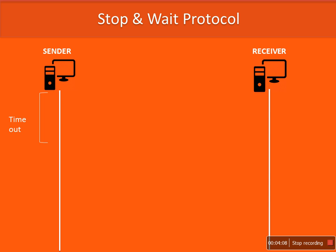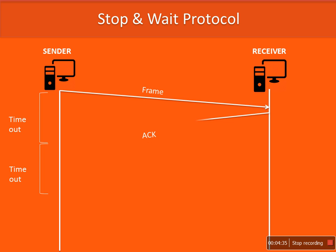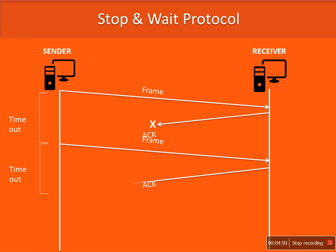Here I will explain why we need sequence numbers and acknowledgement numbers in stop-and-wait protocol. I am discussing four scenarios. First scenario: a frame is sent to the receiver and the receiver sends a reply, and this acknowledgement is sent before the timeout — so it is considered a successful transmission, no issue. Second scenario: the frame is transmitted successfully to the receiver and the receiver sends an acknowledgement, but that acknowledgement is lost during transmission. At the sender side there is no acknowledgement received within the duration.